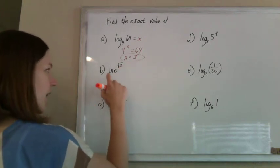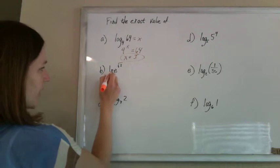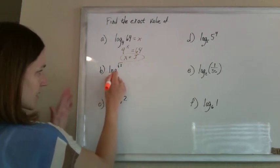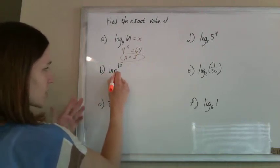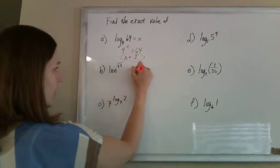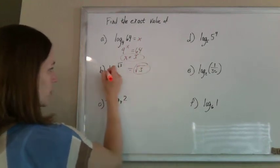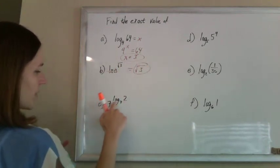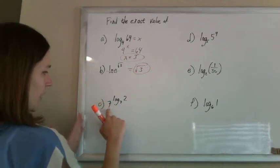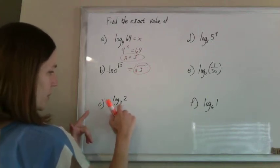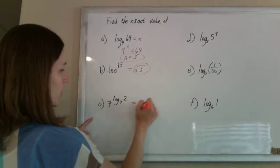This thing, the ln and the e, logs and exponents are opposite. These are just going to knock each other out. The final answer for this is going to be root 3. Just like the final answer for this one, the exponent and the log with the same base are going to knock each other out and just give you a 2.